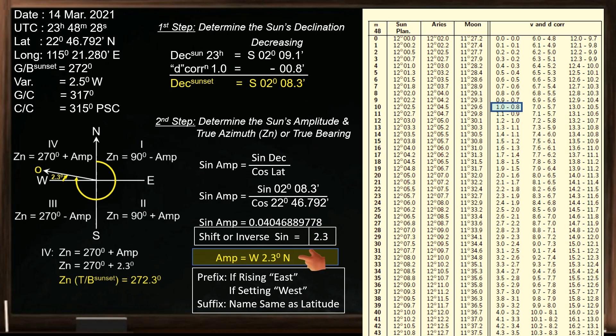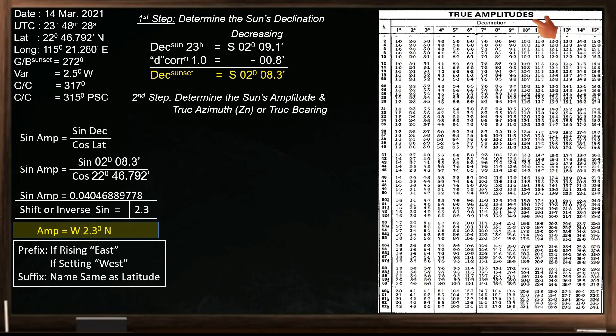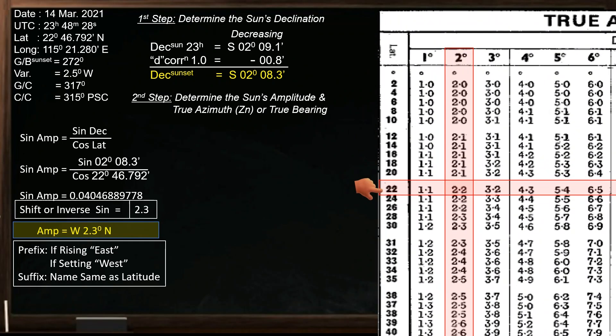Let us now determine the sun's amplitude using the amplitude table. The sun's declination at setting is 2 degrees, 8.3 minutes. In this table, we have 2 and 3 degrees. If we take the nearest value, we need the column along the 2 degrees declination. Next, we need the ship's position, specifically the latitude. In the table, the available latitude is 22 and 24 degrees. If we take the nearest value, we need the column along the 22 degree latitude. Let's zoom in on this portion and tabulate.